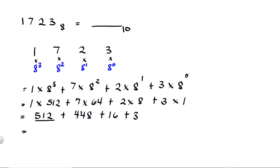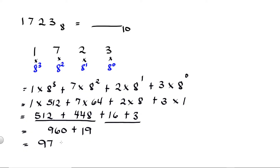Then 512 plus 448 is equal to 960, plus 16 plus 3 is equal to 19, so 960 plus 19 is equal to 979. The decimal equivalent of 1723 octal is 979, so this is 979 base 10.